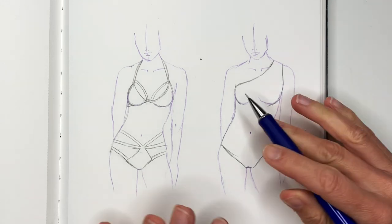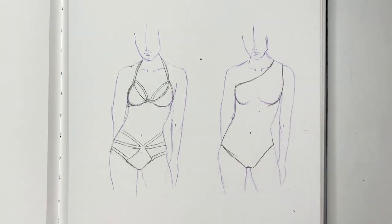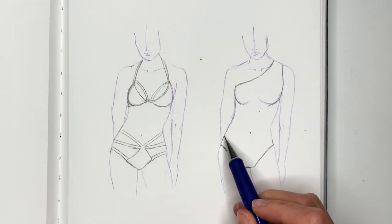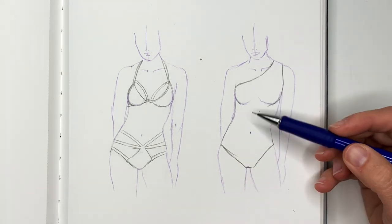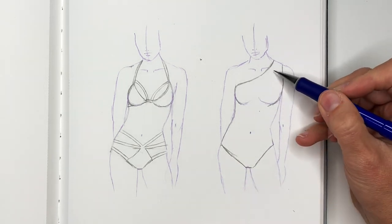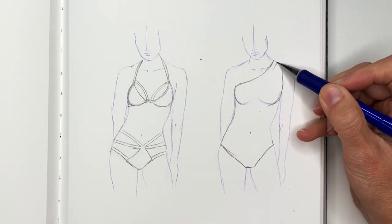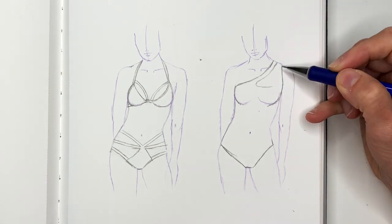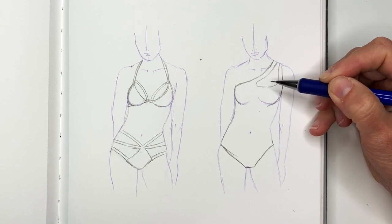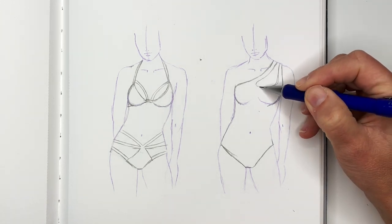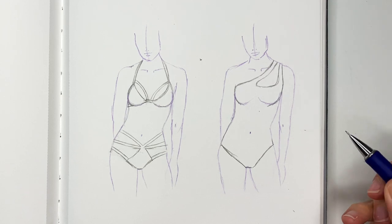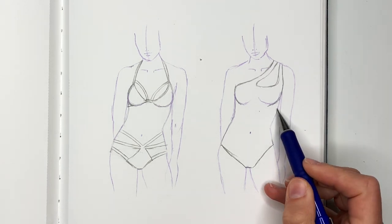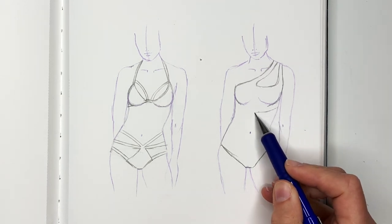It's going on top of the shoulder and then it's going to go down and hug her breast again. Now I could just trace this and that would be it, that would be my one-shoulder bathing suit. You can divide it and have a two-piece or you can have this one-piece with cutouts.